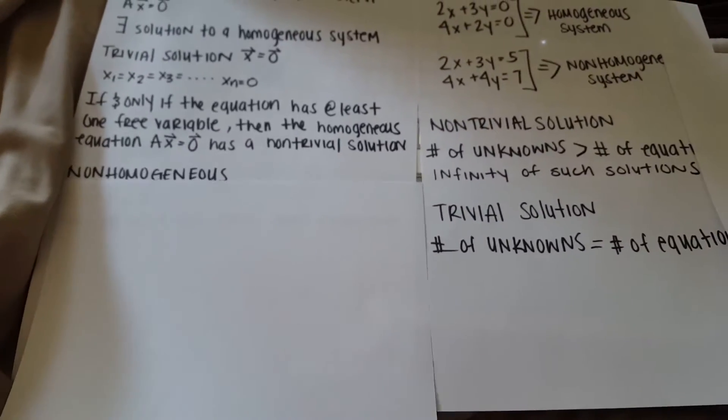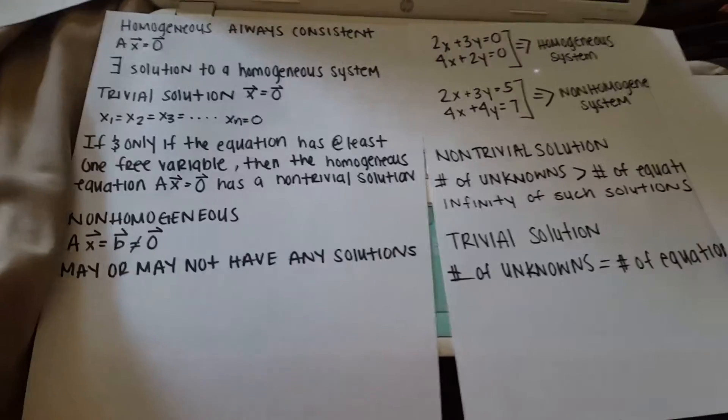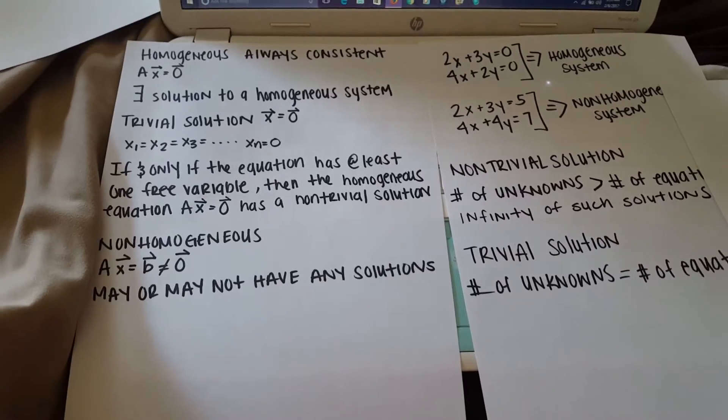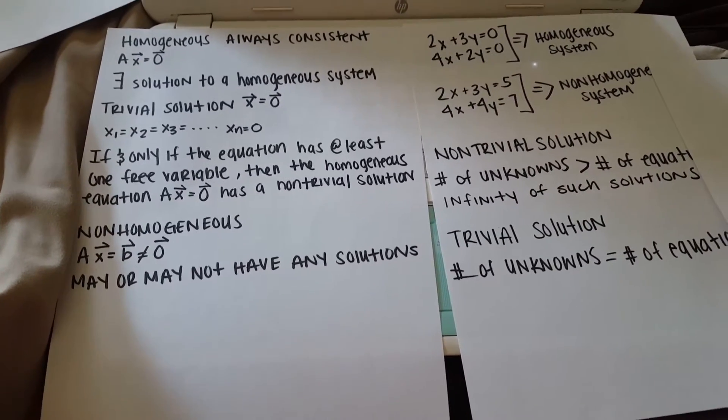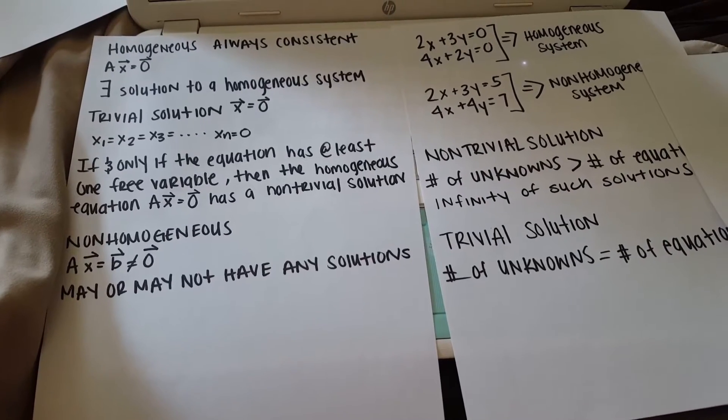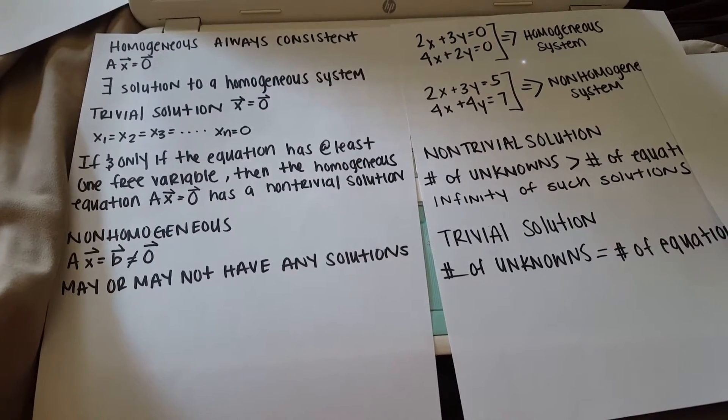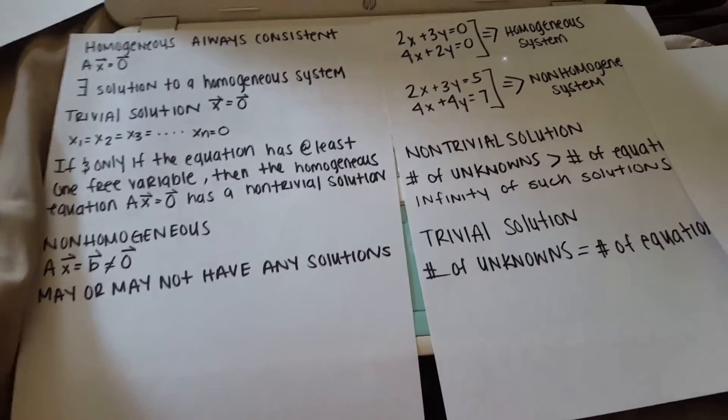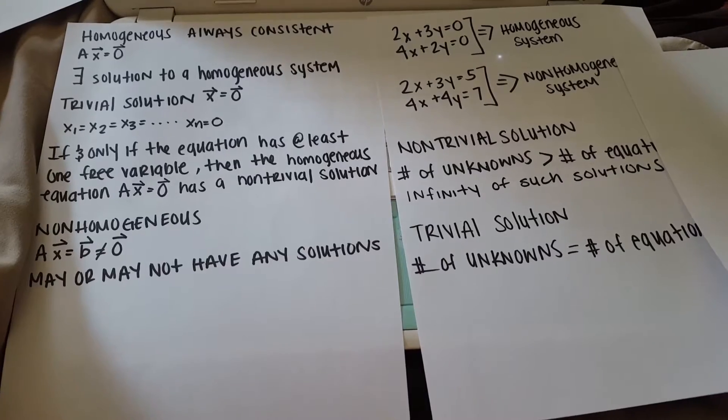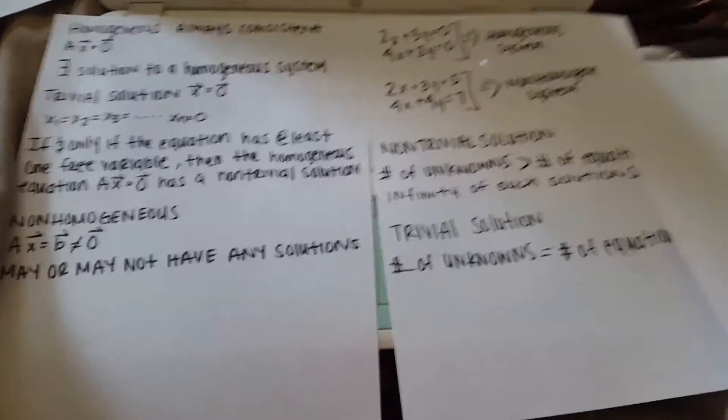Last but not least, you have non-homogeneous systems of equations. In a non-homogeneous system of equations, the matrix A times the vector X equals the vector B. B can be anything, but it's not equal to the zero vector. And as I mentioned, it may or may not have any solutions.